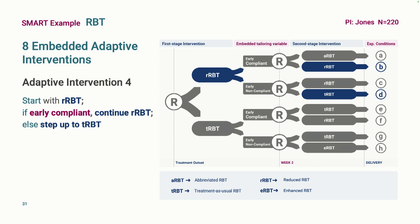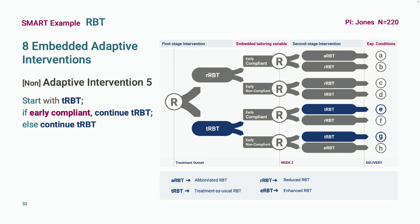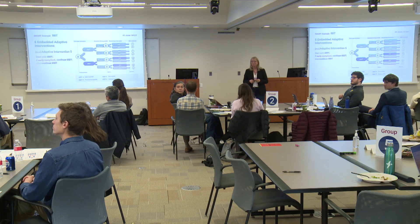One more adaptive intervention: begin with reduced RBT, early compliers stay with reduced, early non-compliers step up to treatment-as-usual. And then there are four of the same at the bottom beginning with treatment-as-usual. The non-adaptive always-treatment-as-usual intervention is the one they had the most evidence about before launching the study, since prior studies only examined traditional RBT. But notice it's in there — it's anchoring the design while they explore how to send participants down different, less costly paths.